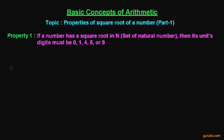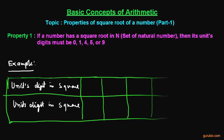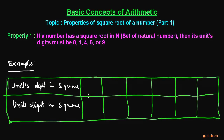Let me make you understand this in a better way by an example. We can understand this property better using this table. If the unit digit in a square is 0, then its unit digit in the square root will be 0. If the unit digit in a square is 1, then the unit digit in the square root would be 1 or 9. If the unit digit in a square is 4, then the unit digit in the square root would be 2 or 8.